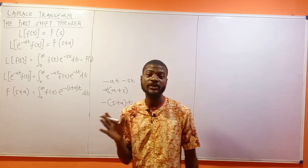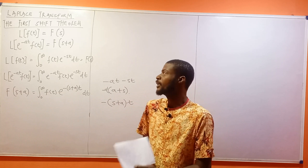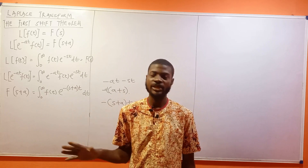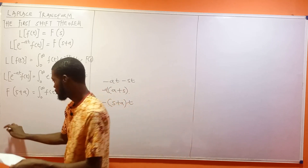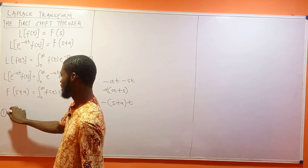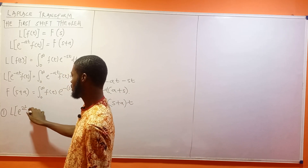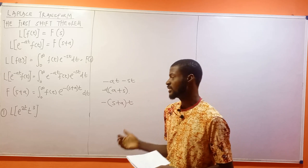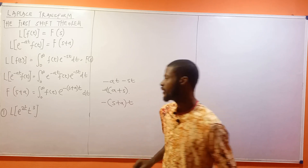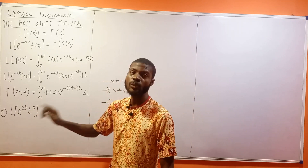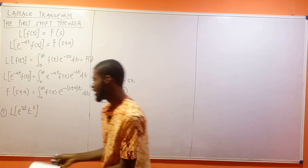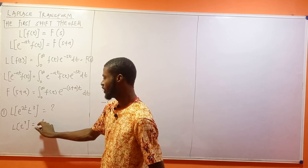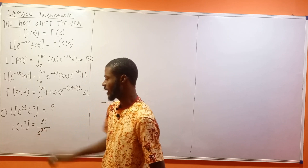Now I am going to continue with examples. This theorem is used when we have an exponential to the power of something multiplying another function — that is when we use this. Example one: what is the Laplace transform of exponential 2t times t³? The function here is t³, so first find the Laplace transform of t³. This gives you 3 factorial divided by s to the power of 3+1, since the Laplace transform of t^n is n factorial over s^(n+1). So 3 factorial is 6, divided by s to the power of 4.